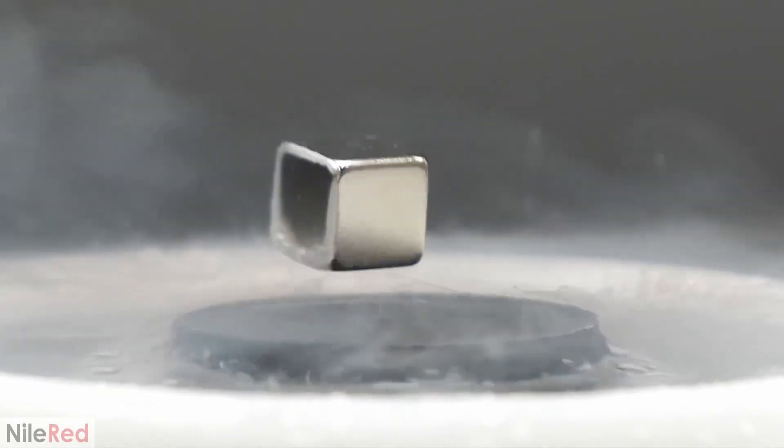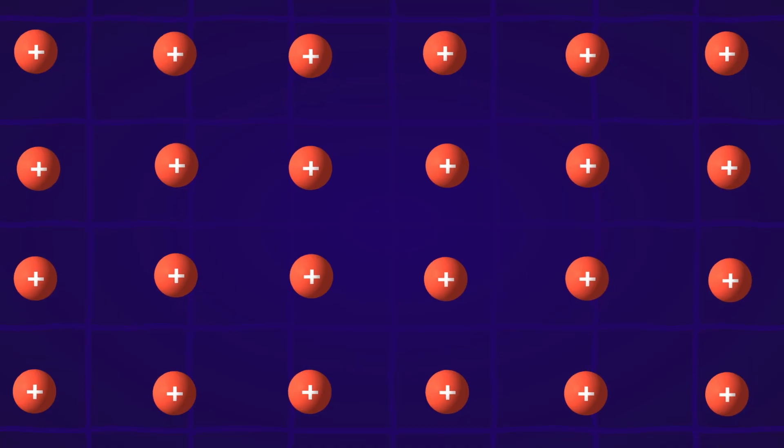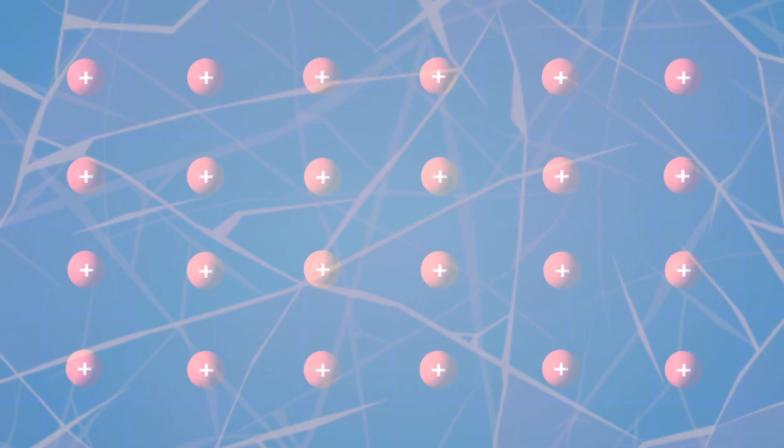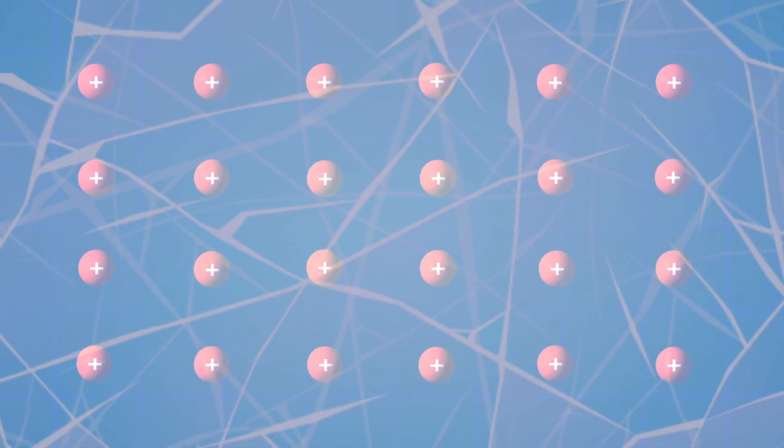So how do we get from this messy picture of electrons just bouncing around to a levitating magnet? Well first we need to cool down. Way down. Close to absolute zero. We have now cooled down so far that the aluminum atoms hardly vibrate at all. It is at these extremely low temperatures that something interesting happens.